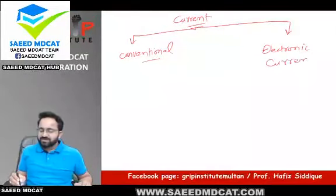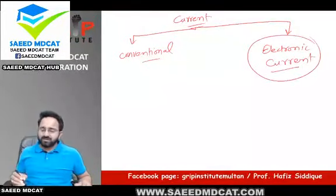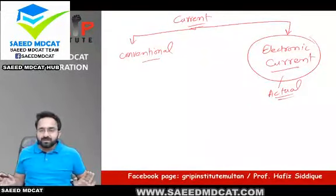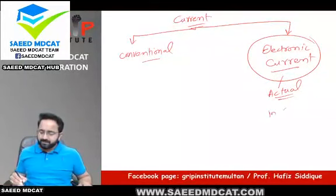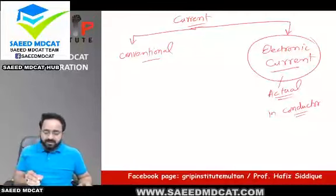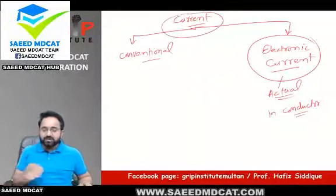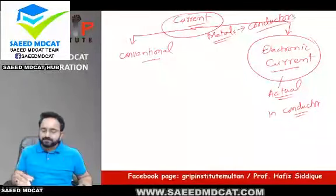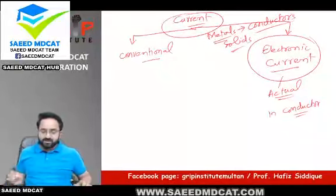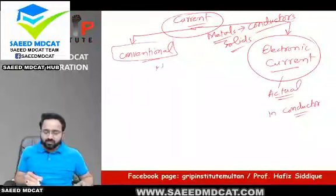My dear students, actual current — electronic current. Current ka actual current yeh hai: electrons move karte hain to jo cheez move karti hai current us ki wajah se hoti hai — in conductors. Conventional current — yeh dono current ki jo main baat kar raha hoon yeh metals ki baat kar raha hoon, conductors ki baat karte hain, solids ki baat karte hain. Conventional ko Urdu mein kehte hain: roayati.